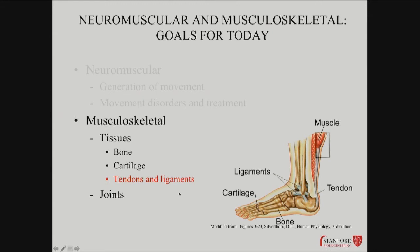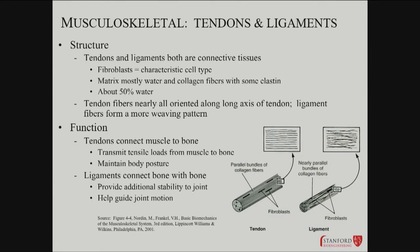Now let's get on to tendons, ligaments, and joints. A ligament is a bone-to-bone connection; a tendon is a muscle-to-bone connection. They operate under different constraints, but they're both connective tissues. They're both composed largely of fibroblasts, and then there's water and collagen fibers — much like cartilage, about 50% water.